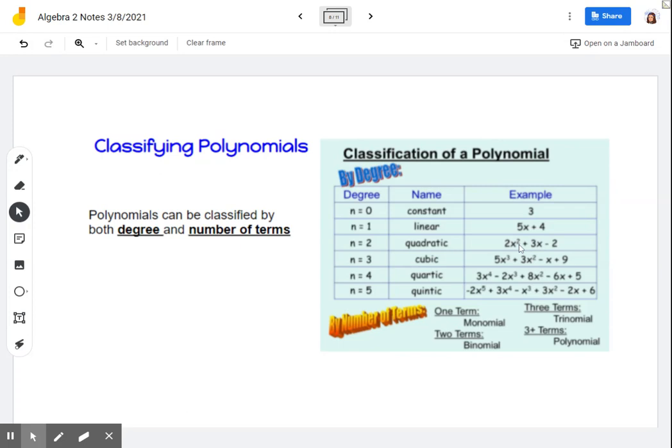So our highest exponent is a 2. The 2 is considered quadratic. So we said in this polynomials unit, we are going to look at higher degrees. So that's why now we're incorporating that. If we have a 3 as our highest exponent, we're going to call that a cubic function. It's a degree of 3. A quartic function will have a highest degree of 4. And a quintic function will have a highest degree of 5.